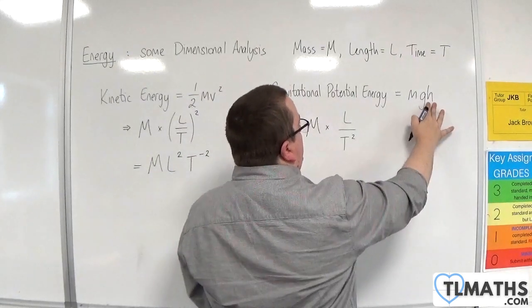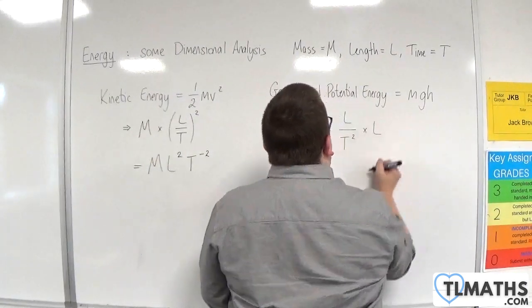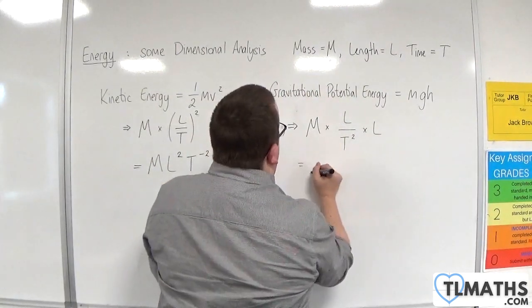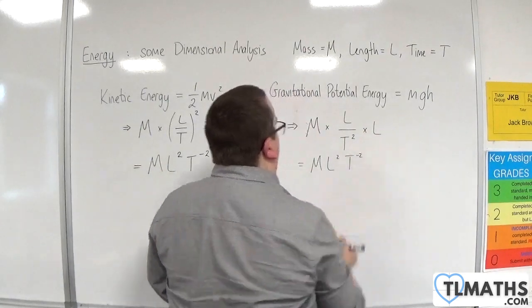The height is a length. So we multiply that by L. And we end up with ML squared T to the minus two.